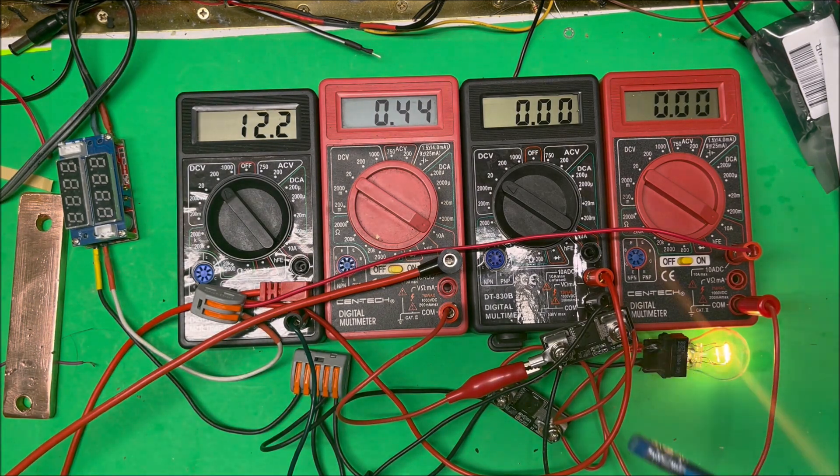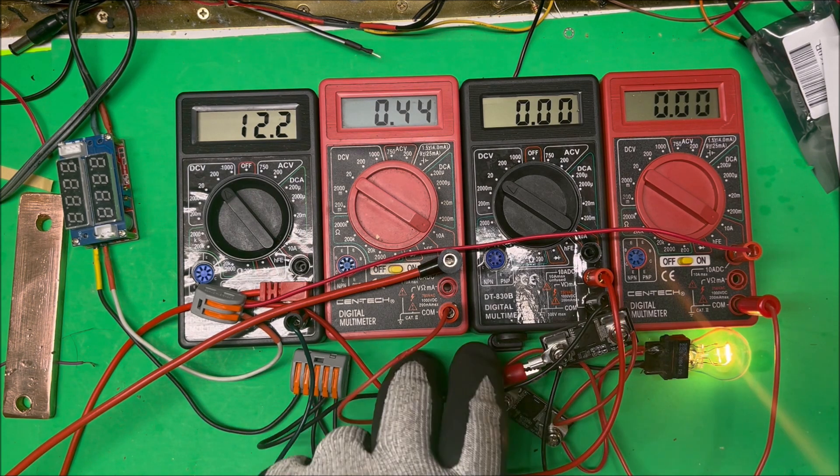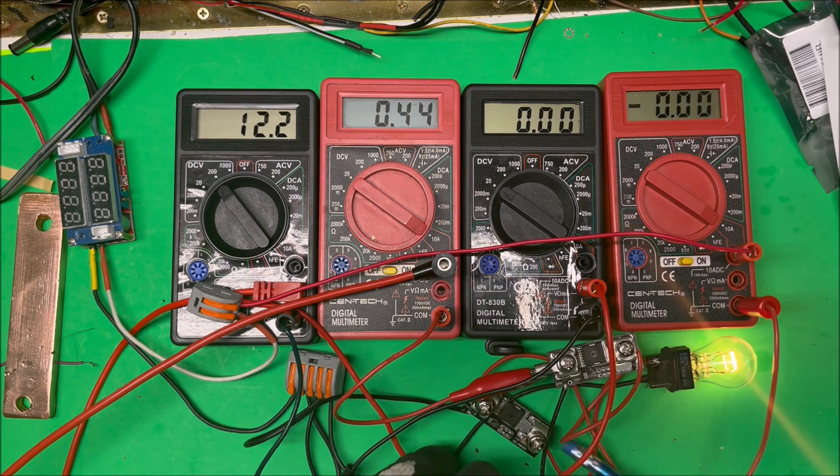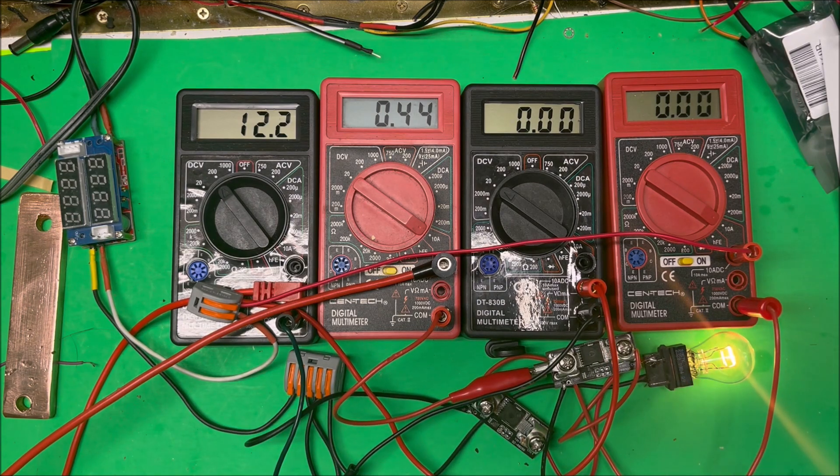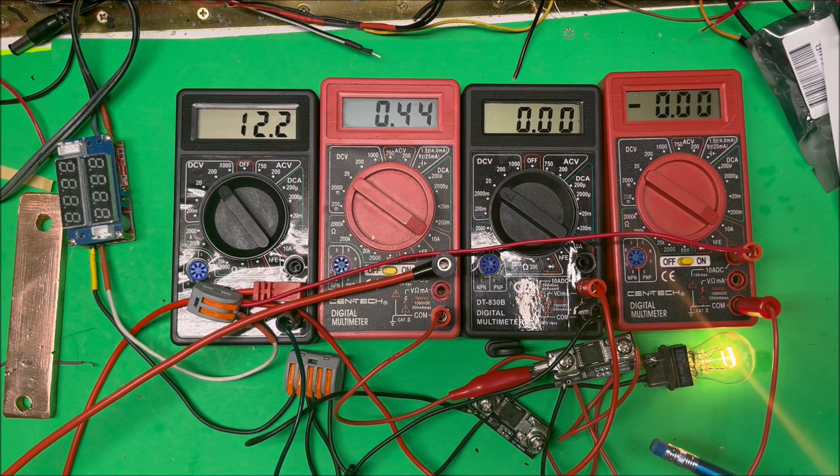Now we have 0.44 amps on it and the light is lit. The two diodes are both tied to the output, the two outputs are tied to the load, the lamp here.